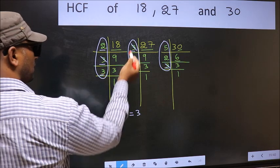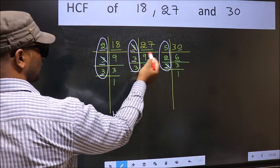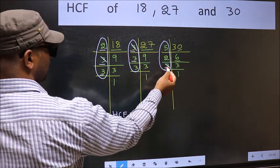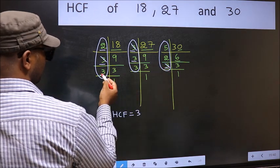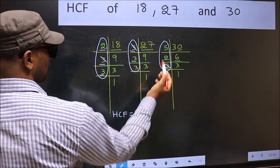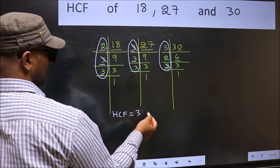Next number, 3. Do we have 3 here? Yes. Go to the next place. Do we have 3 here? No. We don't have 3 present in all the 3 places, so we cannot write here.